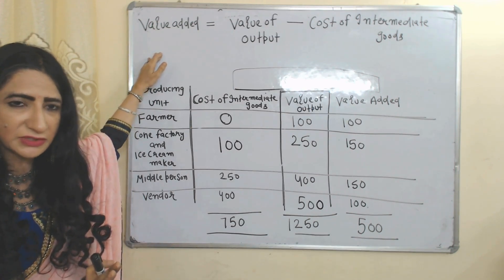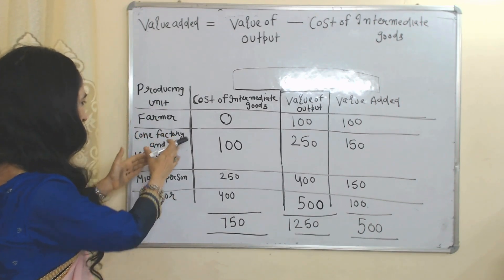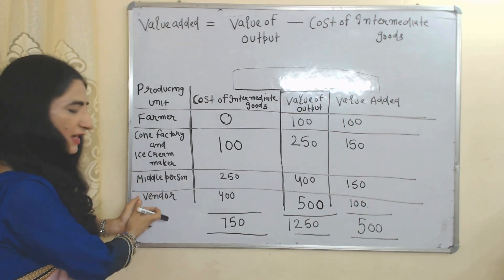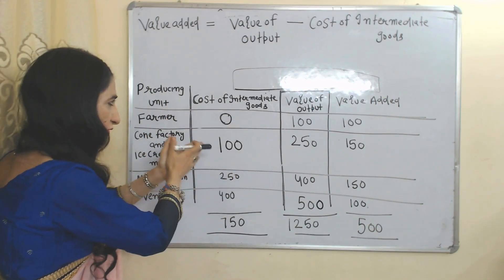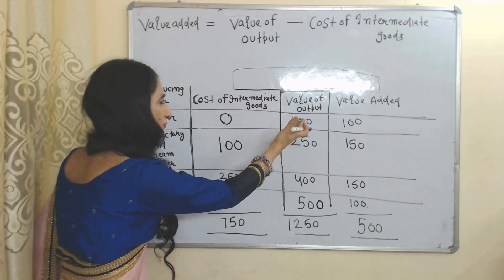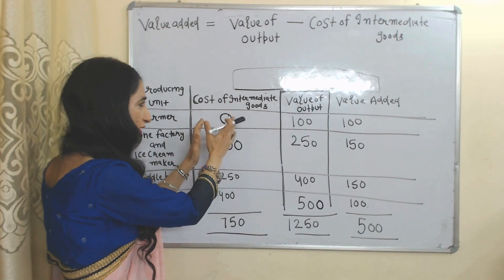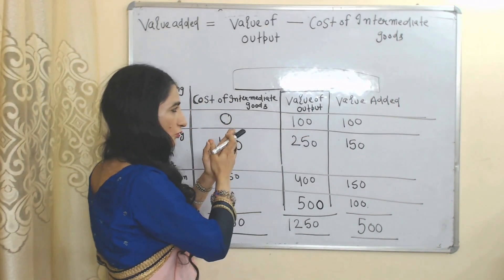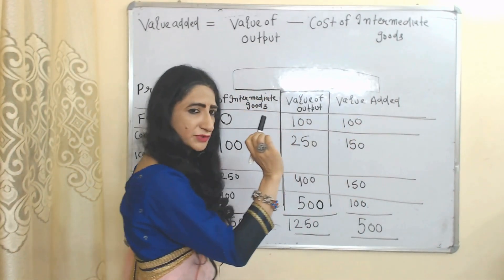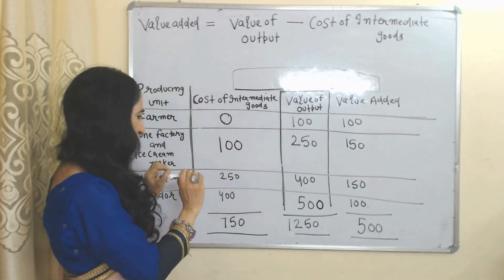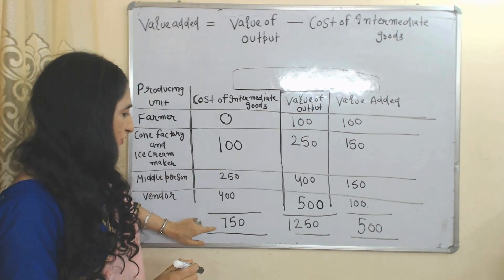In our table, the first column has producing units: farmer, corn factory, ice cream maker, middleman, and vendor. The second column has cost of intermediate goods, and the third column has value of output. When we subtract cost of intermediate goods from value of output, it gives us the value added by each producing unit.